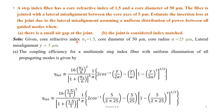Given parameters: core refractive index n1 = 1.5, core diameter = 50 micrometers, therefore core radius a = 25 micrometers, and lateral misalignment y = 5 micrometers.